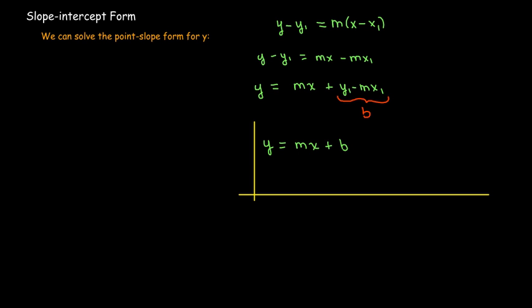Now that b value, that number b, has a special meaning. Because if I put in 0 for x, this term goes away, and I just have y equals b. So (0, b) would be the y-intercept of the line.